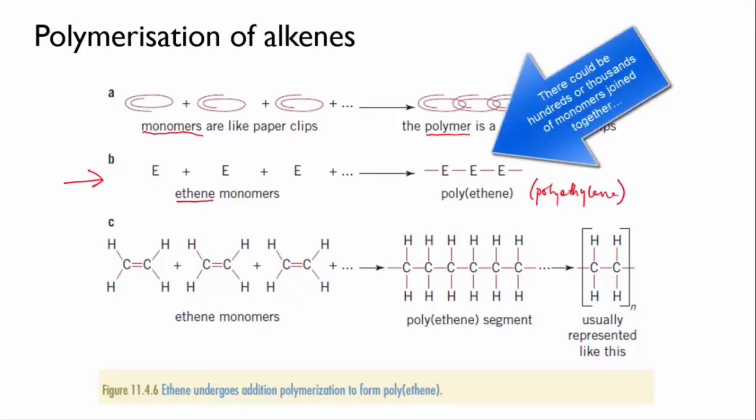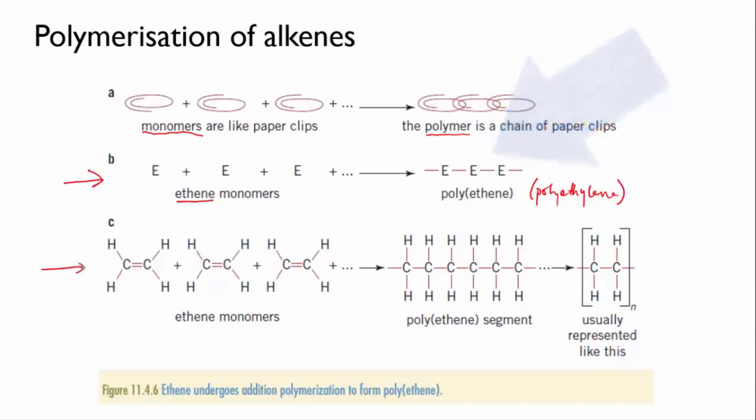However, if we draw things out in more detail, here are the ethene monomers. The polymerization reaction occurs when the second bond in the double bond breaks in an ethene monomer, and that allows each of the end carbons to form a new bond with an adjacent molecule. This continues in a chain reaction, linking more and more molecules together.